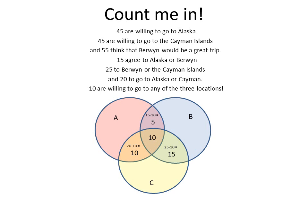That leaves 20 who would simply go to Alaska and none of the other locations, 25 who would simply go to Berwyn and none of the other locations, and 10 who would be willing to go to Cayman. So, adding those numbers up and subtracting from 100 — since they add up to 95 — that means 5 would be willing to plan their own trip.